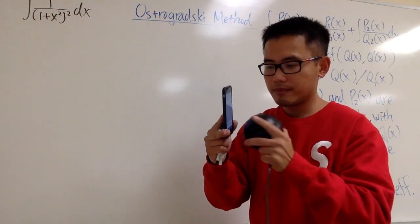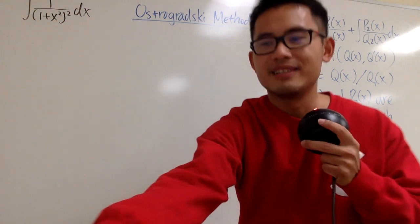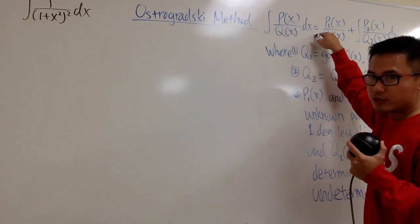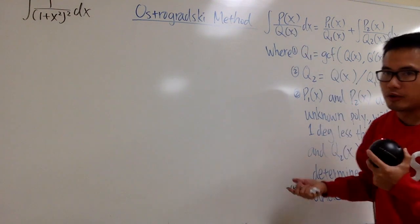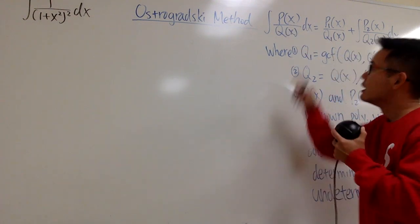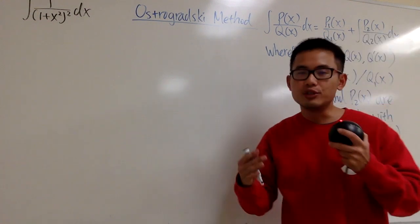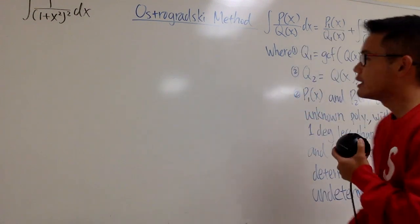This is called the Ostrogradsky method. What it says is the following. If you want to integrate a rational function, of course p and q are polynomials, and under the assumption that the degree on the top is less than the degree on the bottom. If not, just do long division as usual.